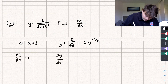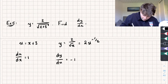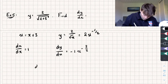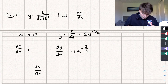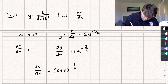So dy by du — we multiply by the power — and we get negative 1 multiplied by u to the power of negative 3 over 2. Multiplying these two things together, dy by dx is equal to negative u to the power of negative 3 over 2, which is negative (x plus 3) to the power of negative 3 over 2.